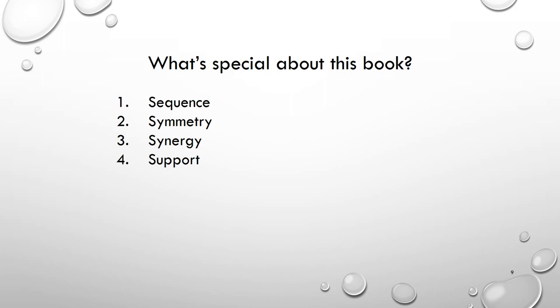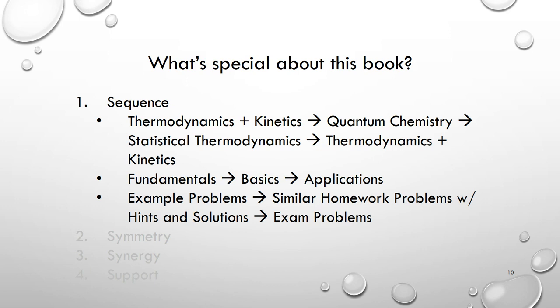What's special about this book? There are four quite special features: Sequence, symmetry, synergy, and support. First, the sequence. Again, in many other PCHEM textbooks, kinetics is the last part of the book. But in this book, we study thermodynamics followed by kinetics, and then quantum chemistry, and then statistical thermodynamics. Multiple reasons. Again, one reason is thermodynamics and kinetics are strongly connected. And another reason which is just more practical: statistical thermodynamics is quite math intensive. So, some BA students or BS biochemistry students may not need to take this part, the statistical thermodynamics. This is mostly for students who are strongly interested in an academic career. And also, if you look at every single part, we go from the fundamentals to the basics to the applications.